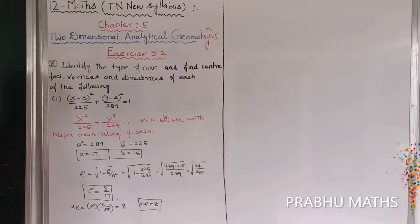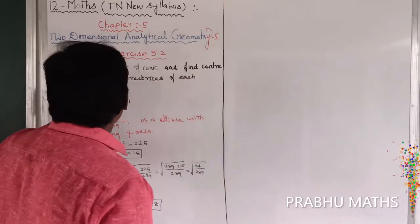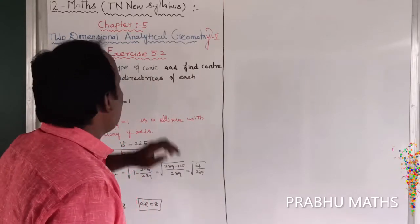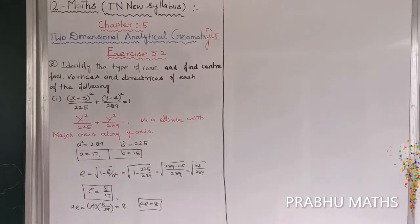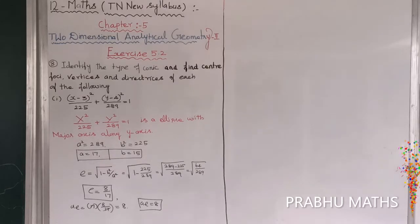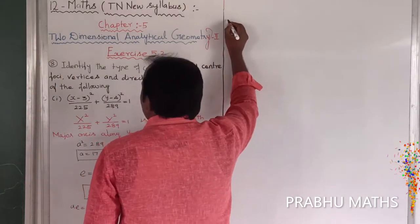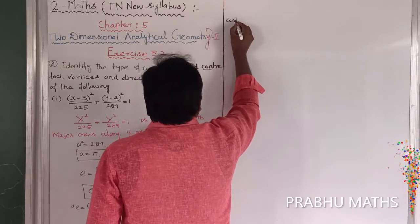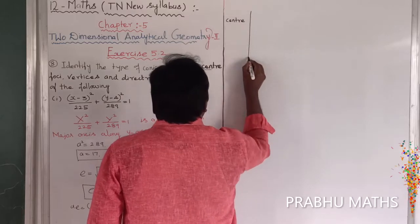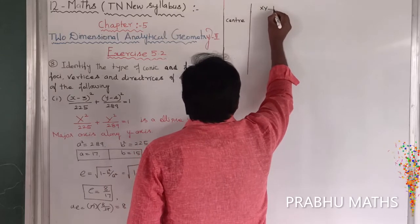Now we will find the following: center, four key points, vertices, and directrices. Note that the capsule x and y refer to the shifted axes.